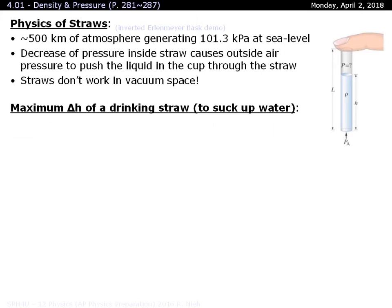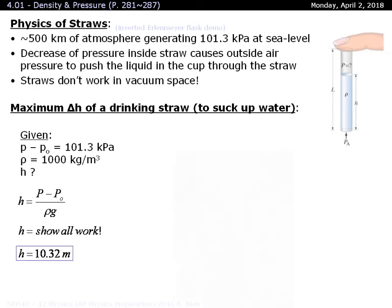Now there actually is a maximum height of a straw that you can use to draw up liquid. And that number happens to be 10 meters. You can't draw a liquid higher than 10 meters or 10.32 meters if you really want to calculate it out. And the science behind that is that you're trying to create a perfect vacuum inside the straw. So then the pressure head would be the difference between a vacuum versus the air pressure at sea level, which is at 101.3 kilopascals. Knowing the density of water is roughly at 1,000 kilograms per cubic meter, the math works out to 10.32 meters.